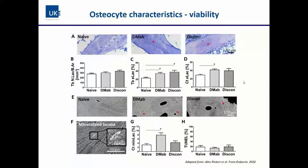We previously looked into human bone specimens from individuals who were either naive or osteoporotic and treated with denosumab — a RANK ligand inhibitor that reduces both bone resorption and bone formation. We found that the number of empty osteocyte lacunae was really prominent. When we quantified this in both trabecular and cortical bone compartments, there was a significantly higher amount of empty osteocyte lacunae where cells were absent and no longer viable. We also had a third group with discontinuation from denosumab without further osteoporosis treatment, and the empty lacunae were persistent at least in trabecular bone.